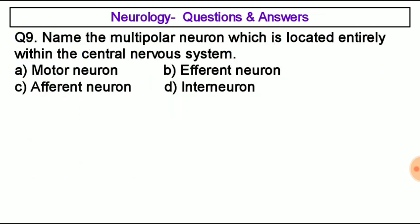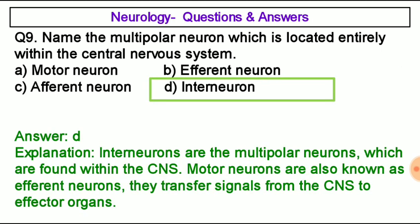Question number nine: Name the multipolar neuron which is located entirely within the central nervous system — option A: motor neuron, option B: efferent neuron, option C: afferent neuron, option D: interneuron. The correct answer is option D, interneuron. Interneurons are multipolar neurons found within the CNS. Motor neurons are also known as efferent neurons; they transfer signals from the CNS to effector organs.